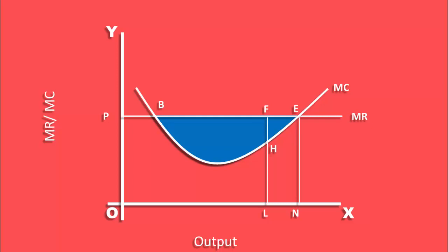He cannot maximize his total profit. There is still scope for him to maximize his profit. Look, the blue colored profit area shrinks.